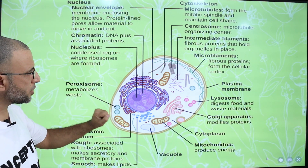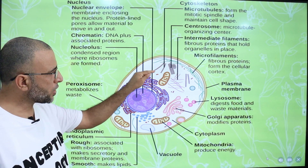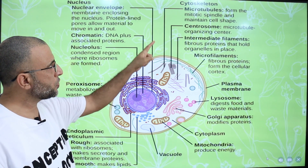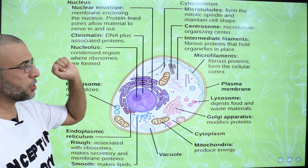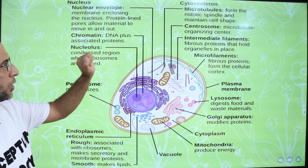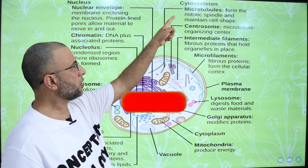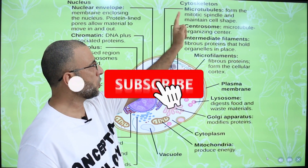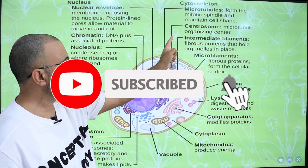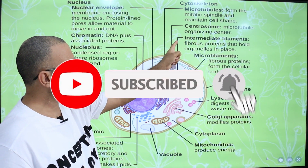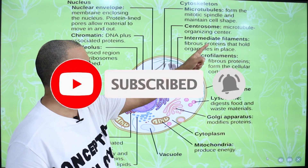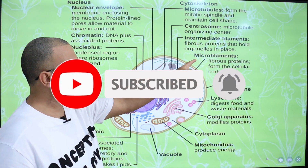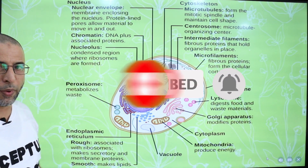In an animal cell, in the cytoplasm, the cytoskeleton is present, and that cytoskeleton includes microtubules, centrosomes, intermediate filaments, and microfilaments.